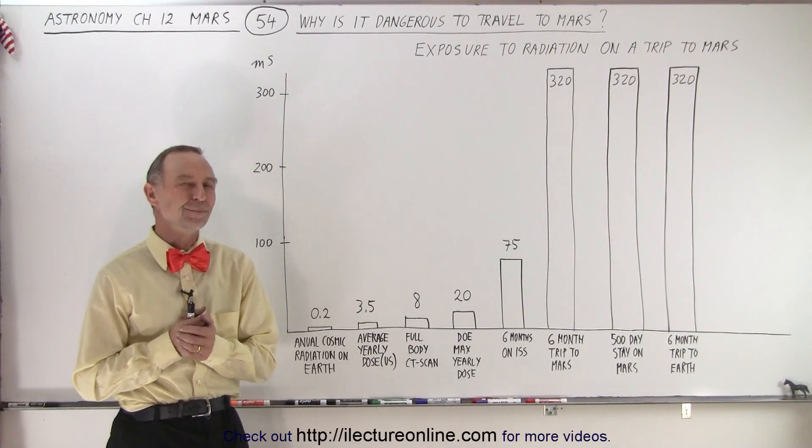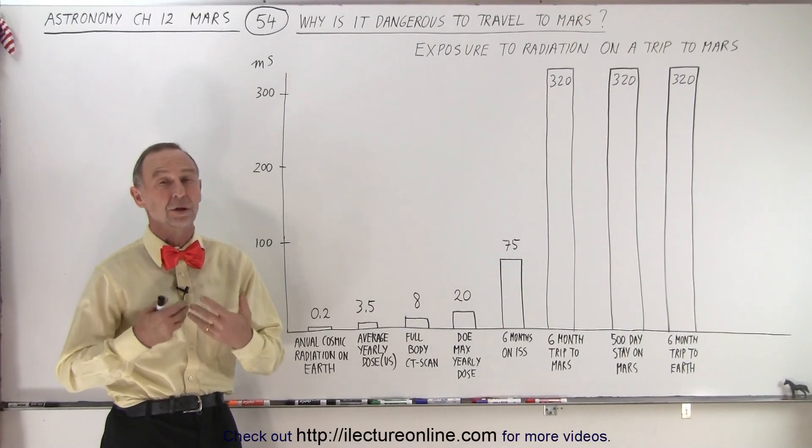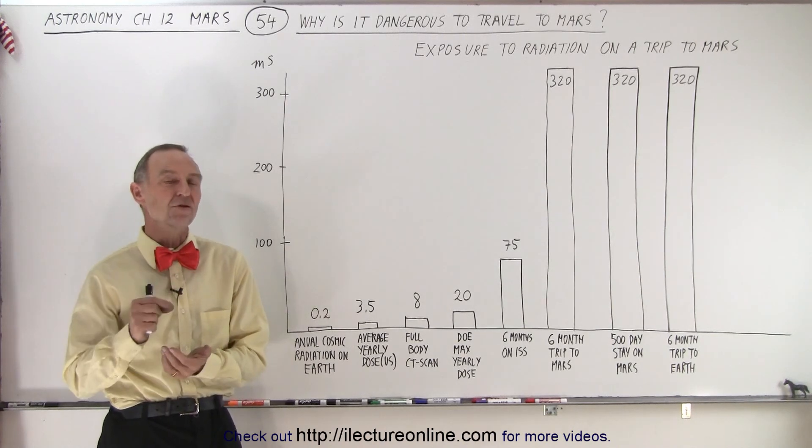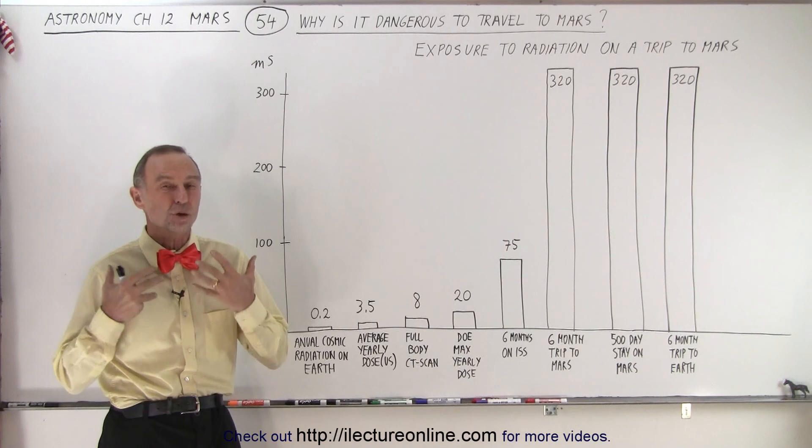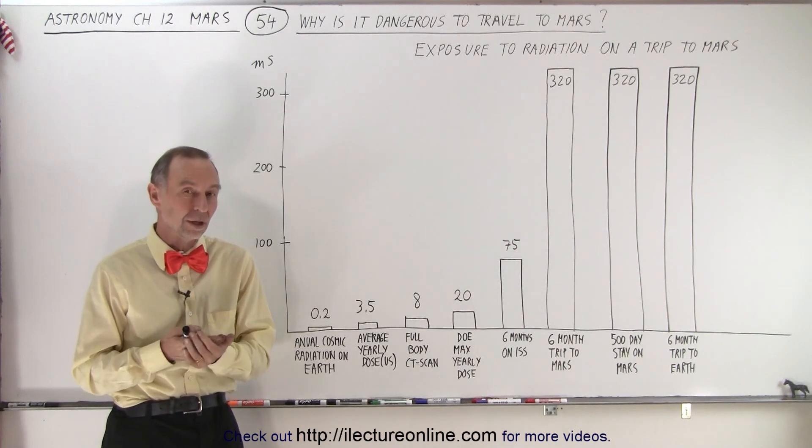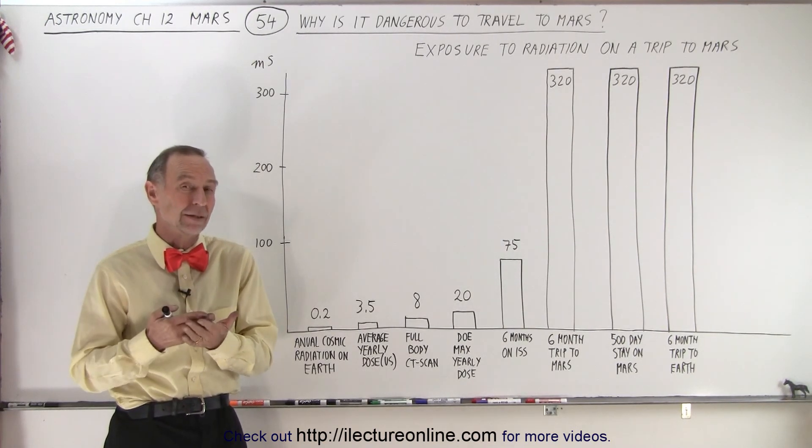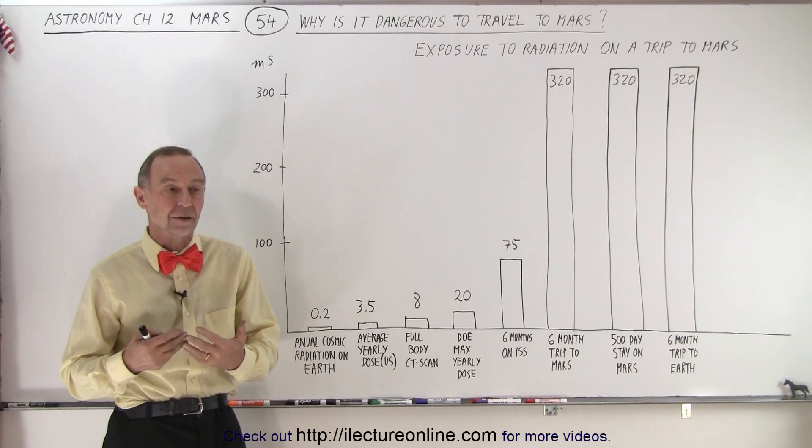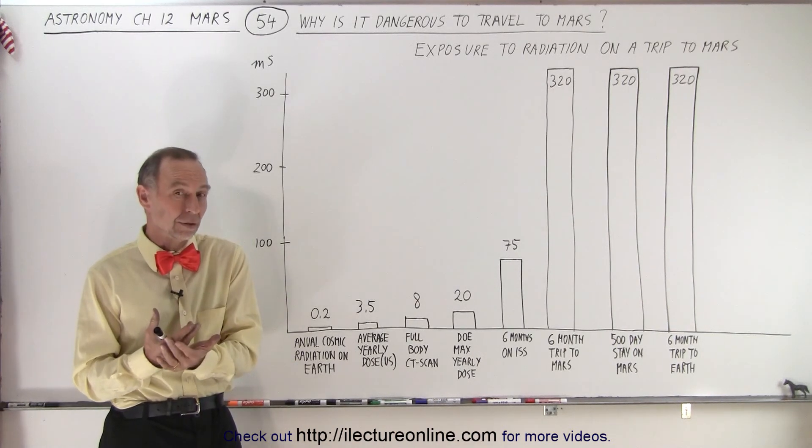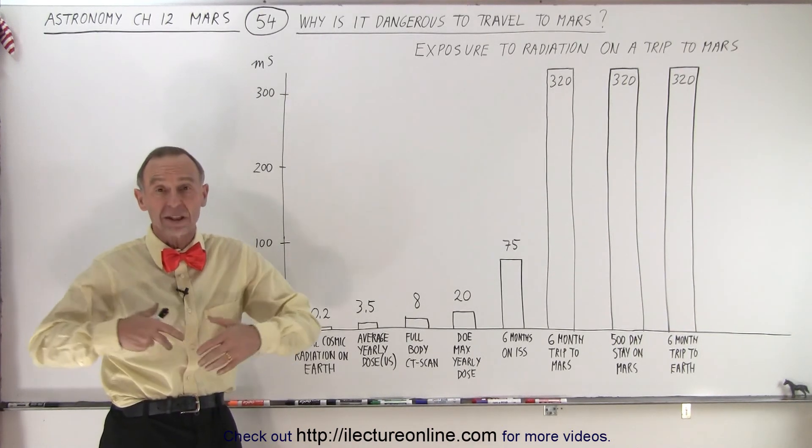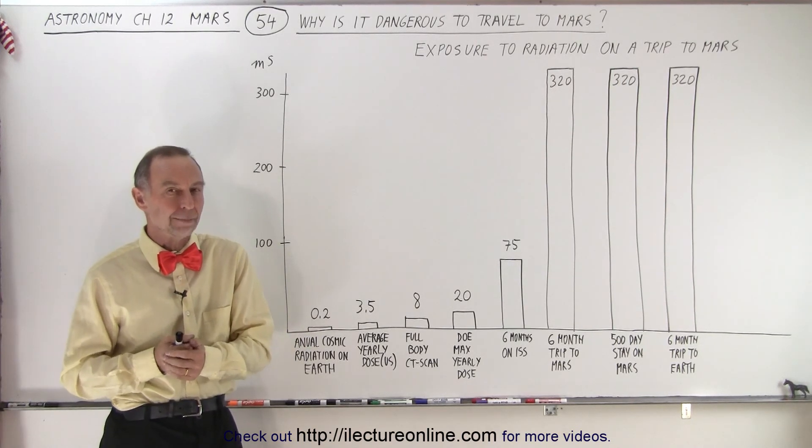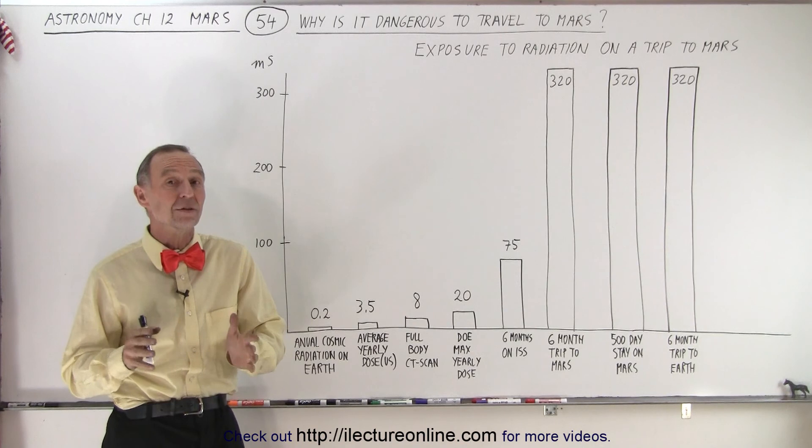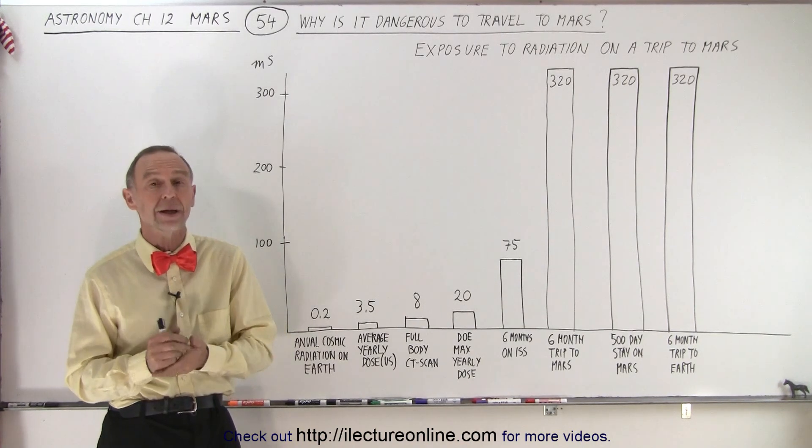Welcome to iLectureOnline. In this video we're going to take a look at one of the dangers of traveling to Mars. Traveling to Mars has enormous complications and dangers: safely making it there, landing safely, surviving on the surface of the planet until you're able to come back and have the technology to come back. All that still needs to be worked out and by no means is that going to be easy to do, and it's going to be extremely expensive to figure out.